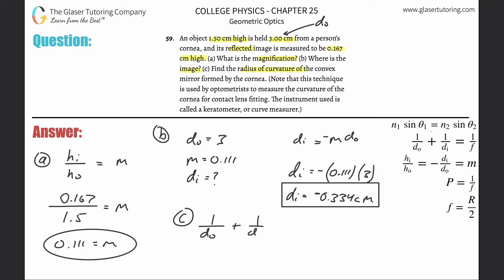We can do one over d_o, the object distance, plus one over d_i equals one over f. All I need to do is cross multiply - we've seen this countless times in this chapter. The focal length is going to be equal to one divided by one over the object distance, which is three, plus one divided by negative 0.334. Be careful, we are dealing with centimeters here and everything is in centimeters, so that's okay.